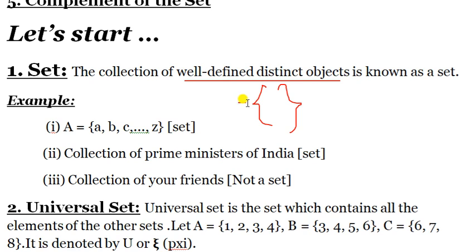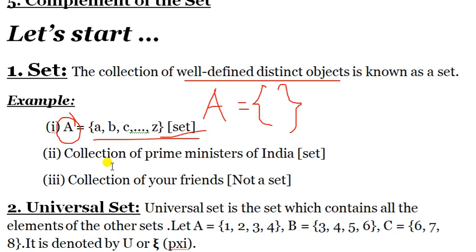Any set is denoted by any capital alphabet A to Z. For example, set A contains elements A, B, C, D till J — you can identify and count them, so it is well-defined and thus it is a set. Collection of prime ministers of India is also a set, because you can count all the minister names one by one. That's why it is well-defined and distinct.